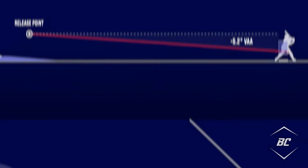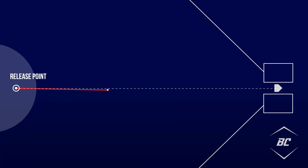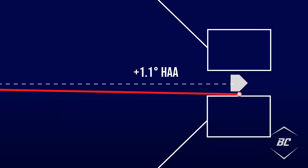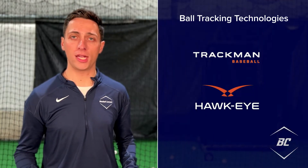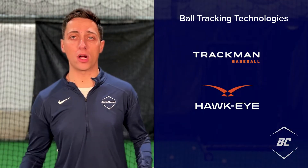Horizontal approach angle is the angle of the ball's horizontal descent. Simply put, vertical approach angle measures the steepness of a ball's descent while horizontal approach angle measures the amount of its side-to-side motion. Vertical and horizontal approach angle can be directly measured by ball tracking technology like TrackMan and Hawk-Eye.